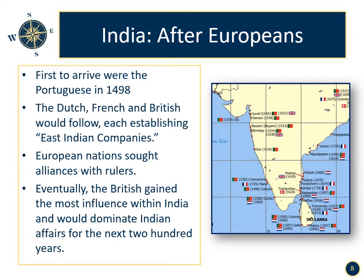India after Europeans. The first to arrive were the Portuguese in 1498 with the voyage of Vasco da Gama. Alfonso de Albuquerque, another Portuguese explorer, would expand his nation's influence in India during the early 1500s. India was very wealthy and the Europeans had few goods to offer except silver and gold. The Dutch, French, and British would follow, each establishing East India companies. European nations took advantage of religious divisions within India through the establishment of alliances. Eventually the British gained the most influence within India and would dominate Indian affairs for the next 200 years.